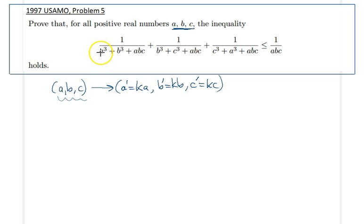Because as you can see, if you plug in KA, KB, KC in those expressions, you will get a K cube factor in each of these. And then you will have a K cube on the right hand side and they will all cancel out.